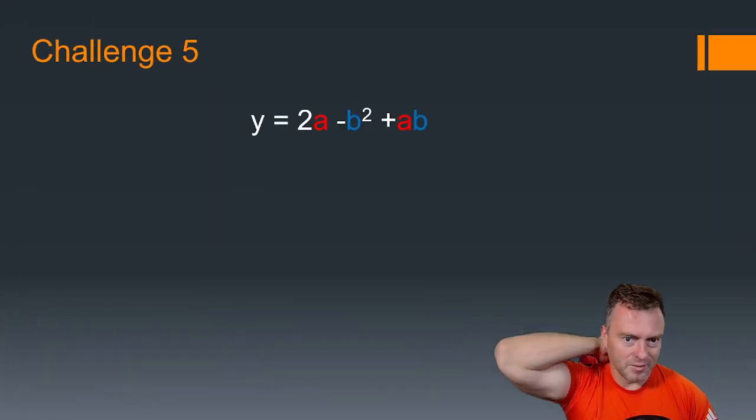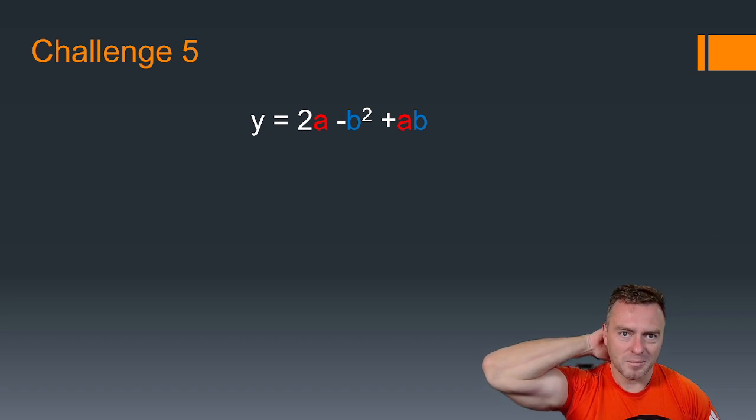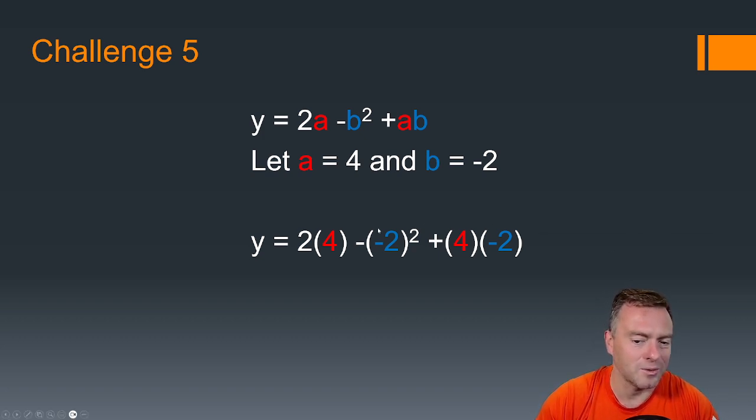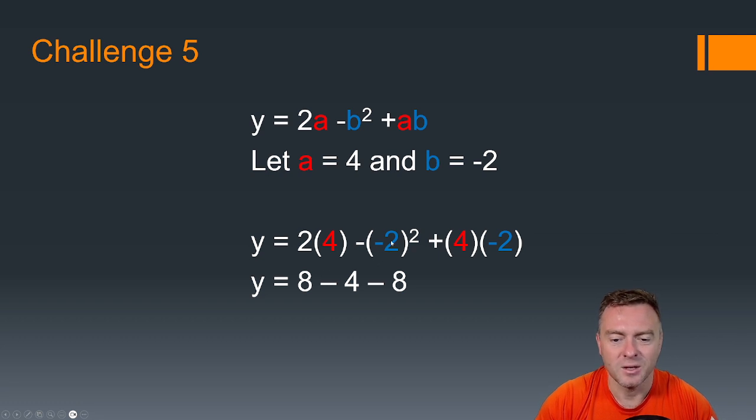So then this one here, we've got 2a - b² + ab. So a = 4, b = -2. So we've got 2 lots of 4 minus -2². And notice the negative 2 is squared all inside here, so we need to do that first and then might do the negative version of it. So this gives us 2 times 4, which is 8. And -2² becomes 4, but then it's the minus version. So that's why it stays negative.